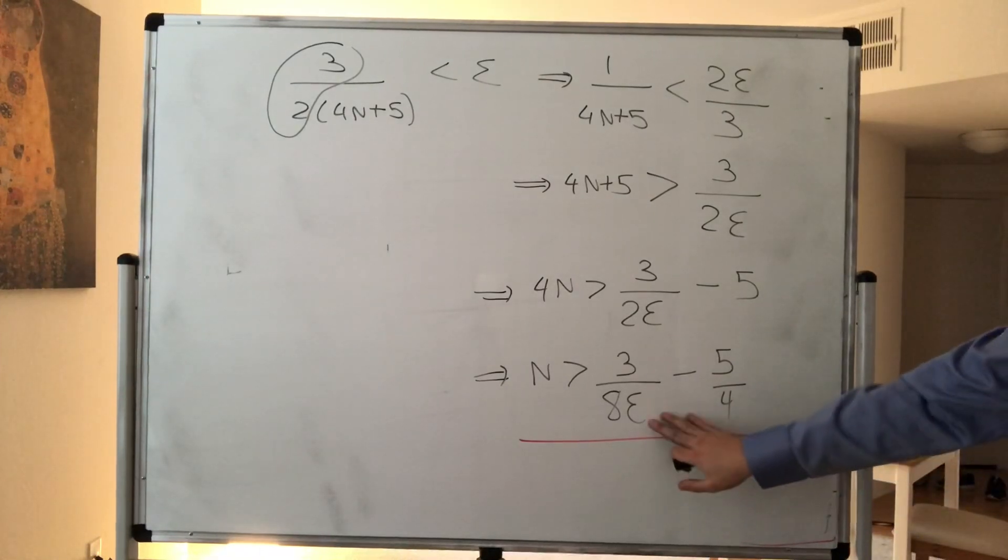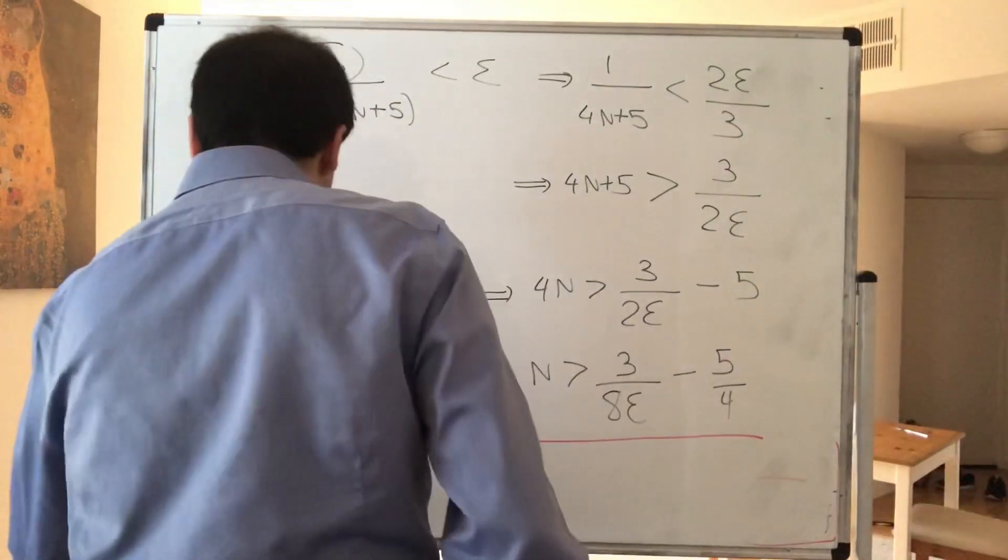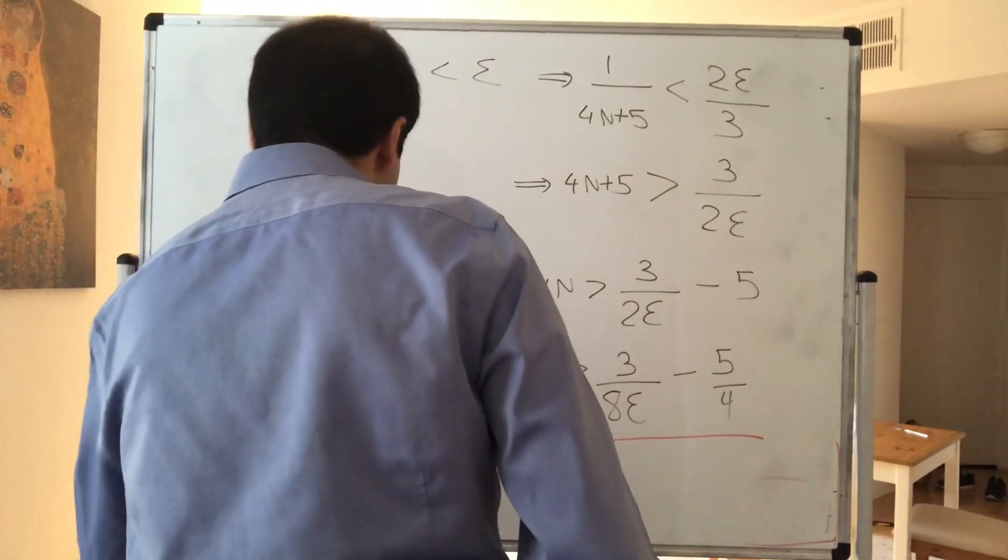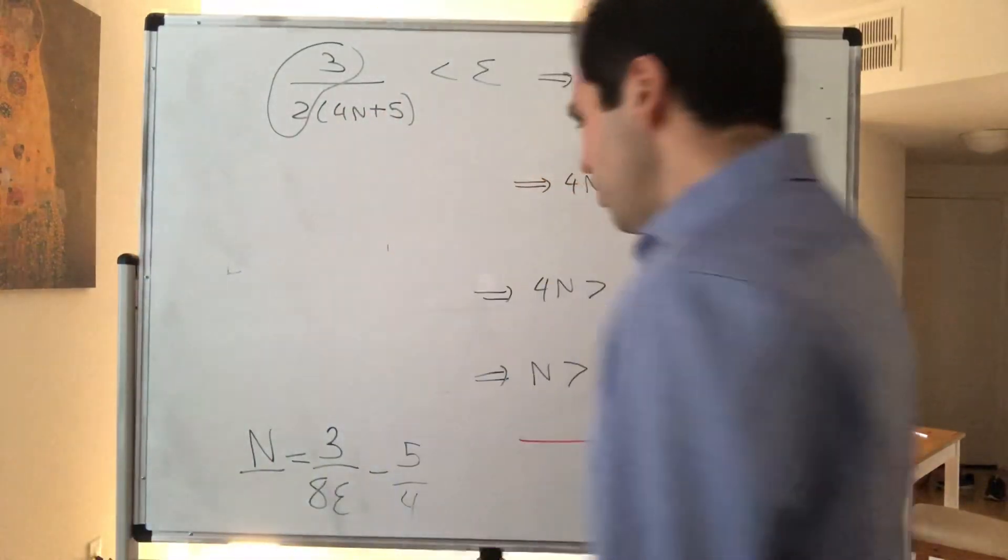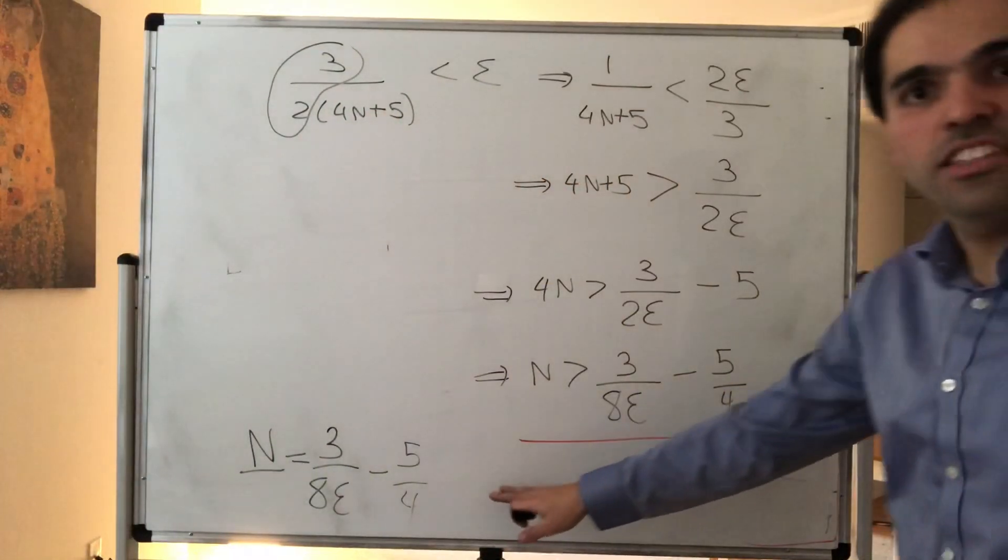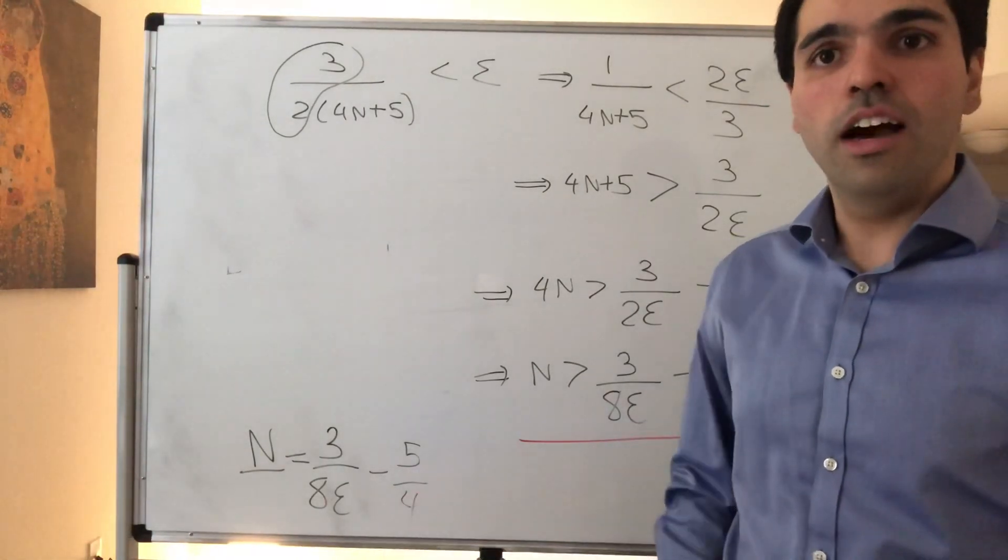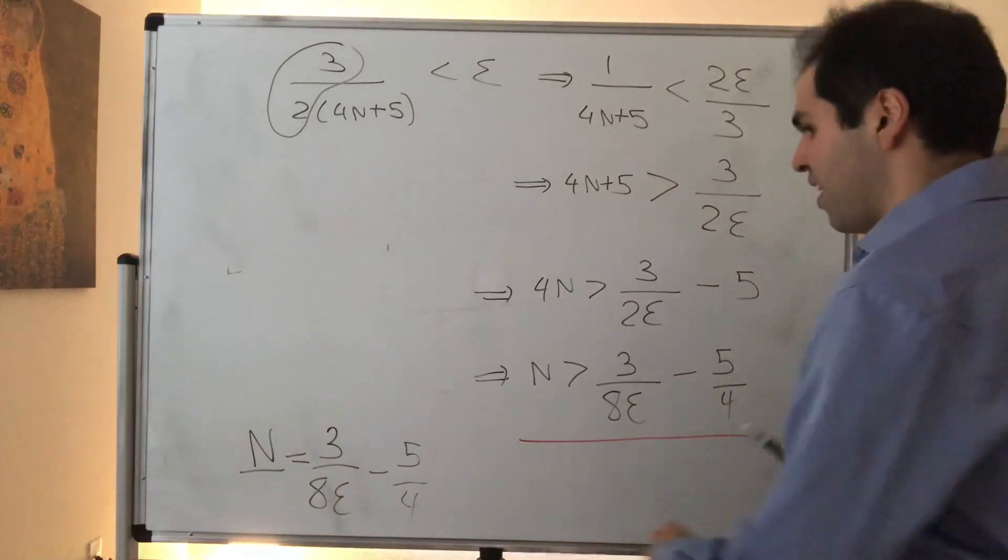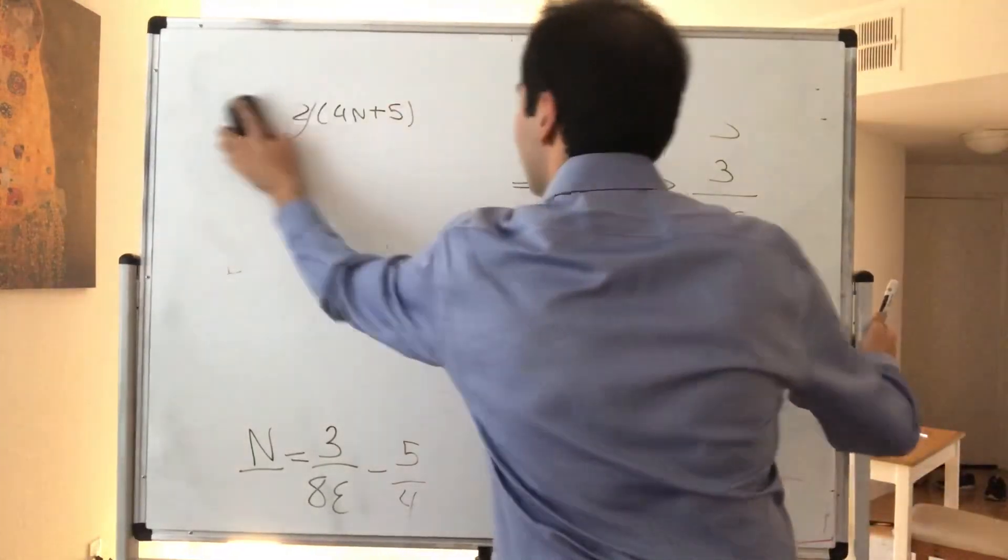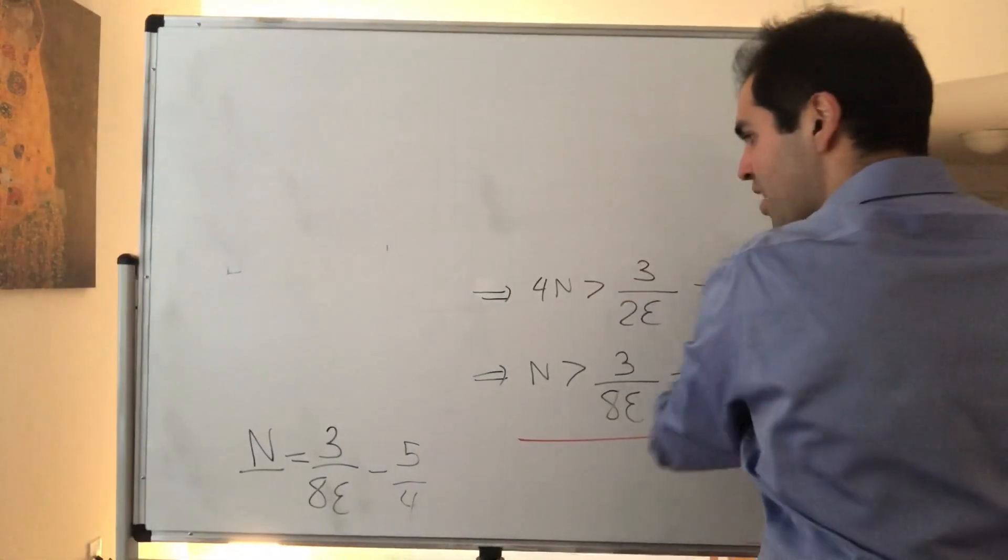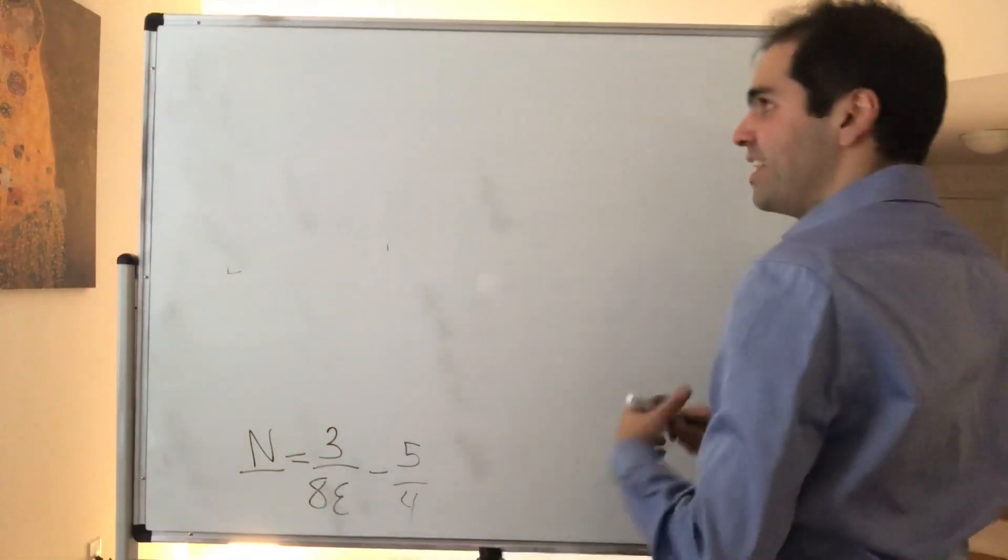And notice, you don't even need to check if this is positive or negative, because remember, capital N is just any real number. So, it doesn't matter if it's positive or negative, but little N has to be positive. That's simple. Okay, so this is your N, and now, what you have to do, you just have to check that this works.